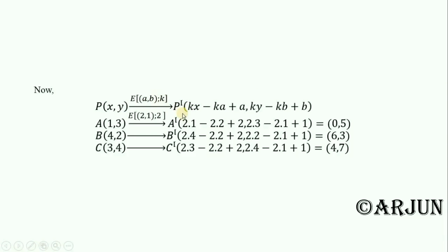At the time, image of P is P prime and multiply K into X, KX. Here it starts from positive then it turns off negative: K into A, KA, and also turns off positive plus A. Similarly K into Y, KY minus K into B, KB plus B. This is our formula.